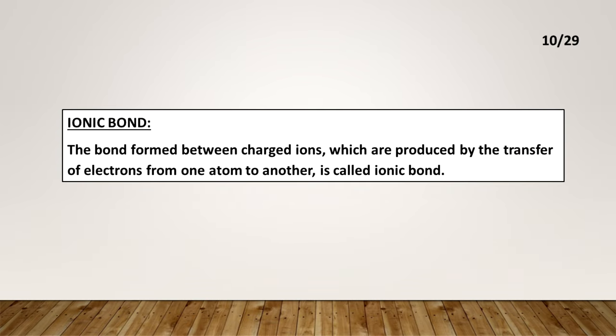Ionic bond: The bond formed between charged ions, which are produced by the transfer of electrons from one atom to another, is called an ionic bond.